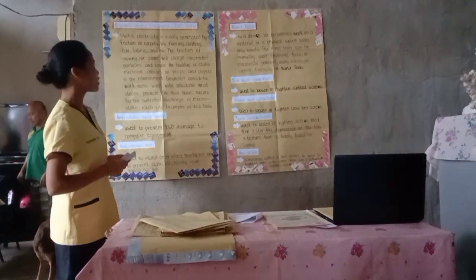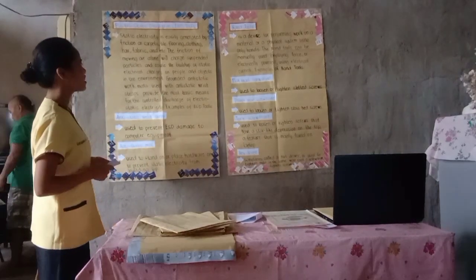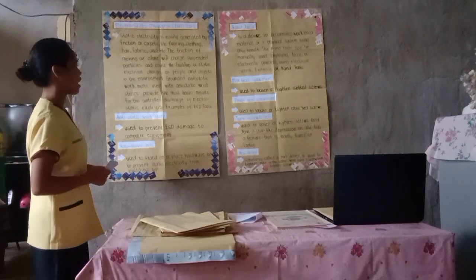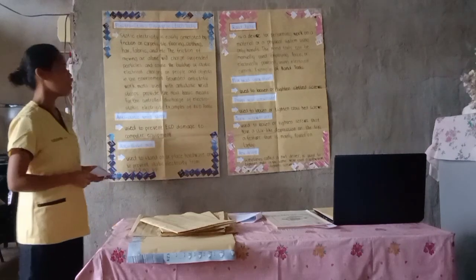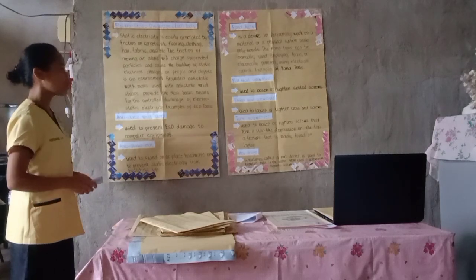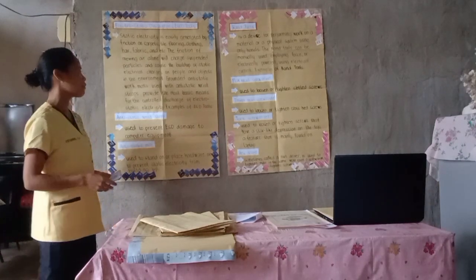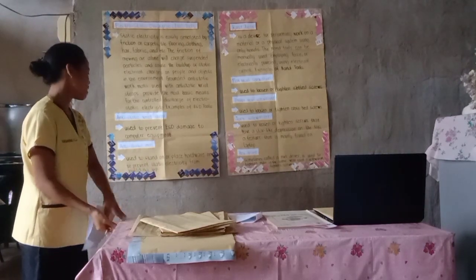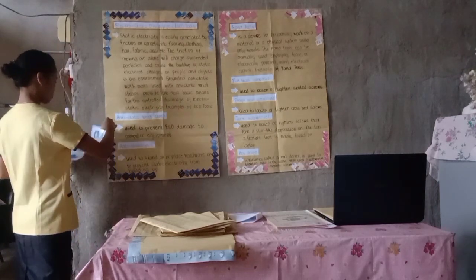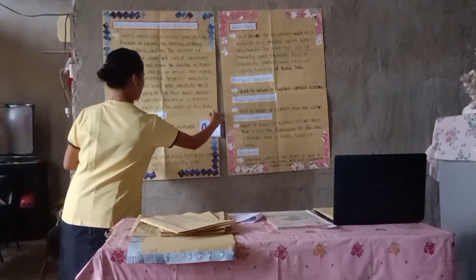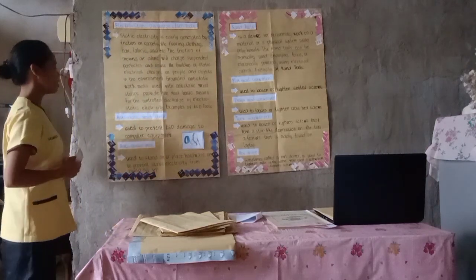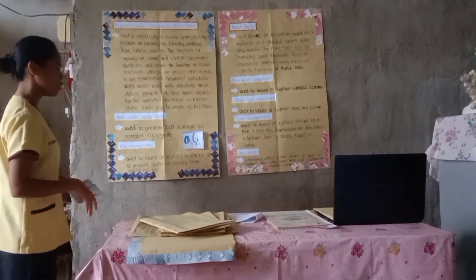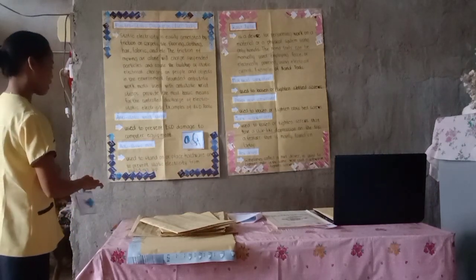First, we will talk about electrostatic discharge or ESD tools. Static electricity is easily generated by friction on carpets, tile flooring, clothing, hair, fabric, and so on. The friction of moving air alone will charge suspended particles and cause the build-up of static electrical charges on people and objects. Grounded anti-static work mats used with anti-static wrist straps provide the most basic means for controlled discharge of electrostatic electricity. Examples of ESD tools are anti-static wrist straps and anti-static mats. Anti-static mats are used to stand on or place hardware to prevent static electricity from building up.